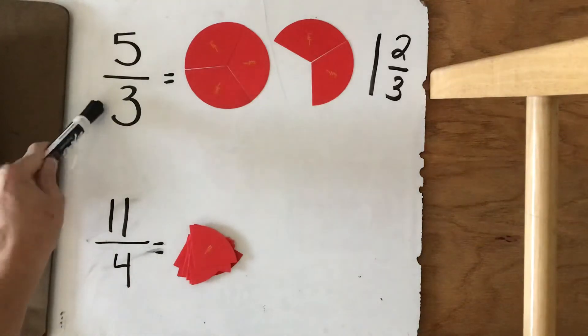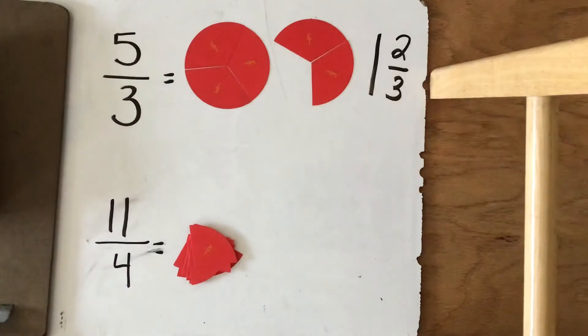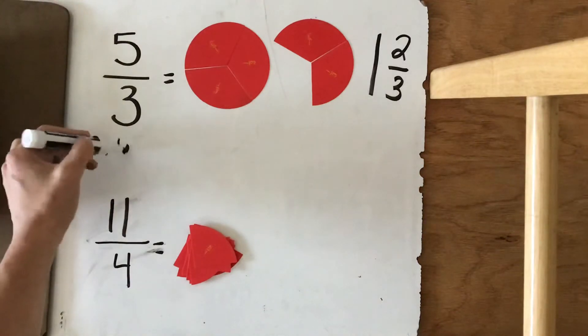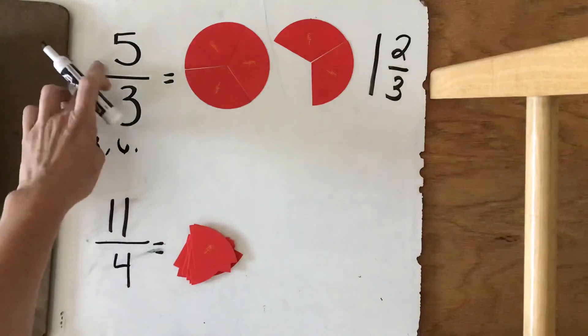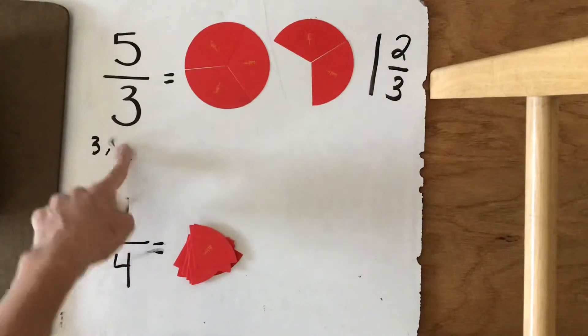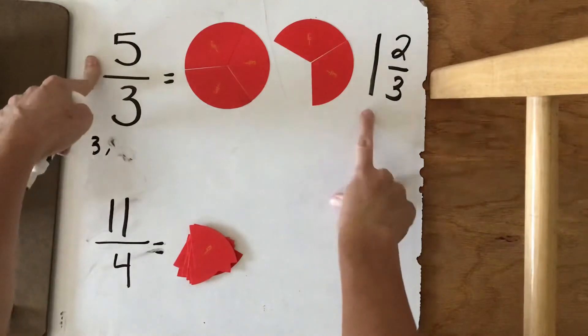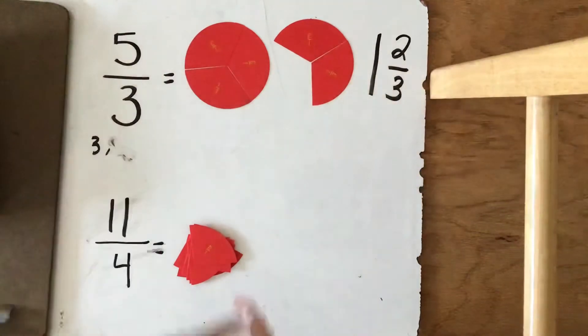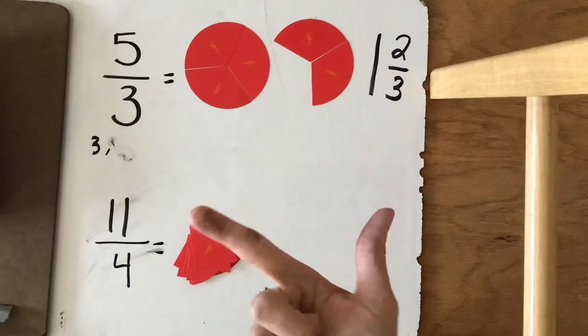how many times can 3 go into 5? If you're not sure, we can skip count. 3's. 3, 6. Well, we can't go past 5, so this is too much. So 3 can only fit into 5 one time. And then we have 2 left over. To get to 5, we need 4, 5. So 2 left over.